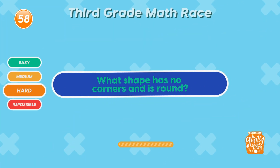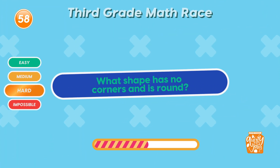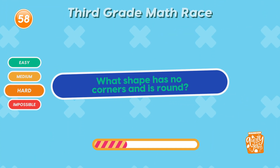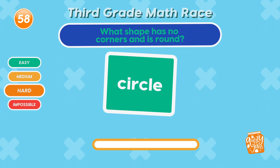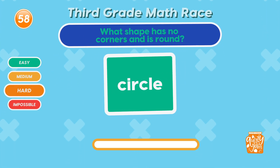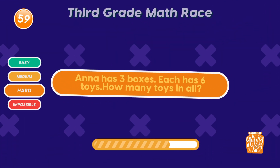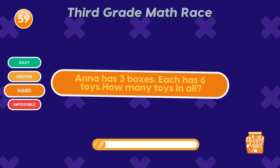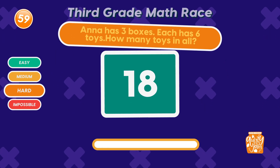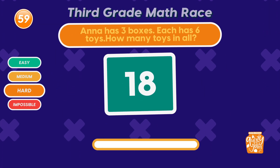What shape has no corners and is round? Circle! Rolling through geometry! Anna has 3 boxes, each with 6 toys. How many toys in all? 18! Boom! Boxed it up!